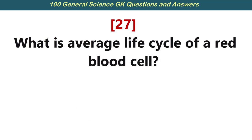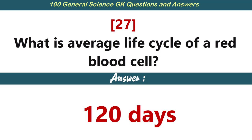What is the average life cycle of a red blood cell? Answer: 120 days.